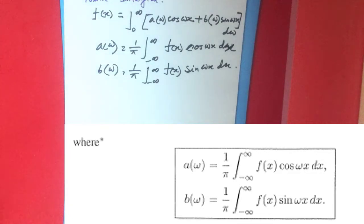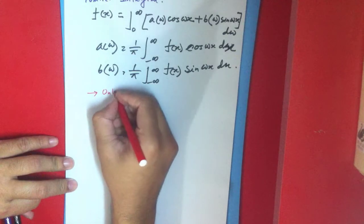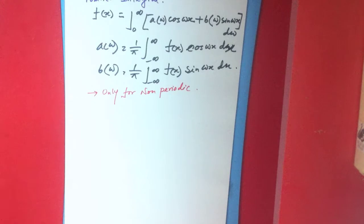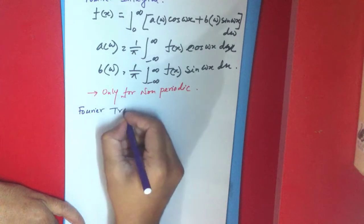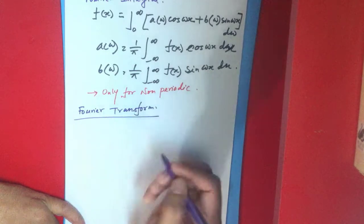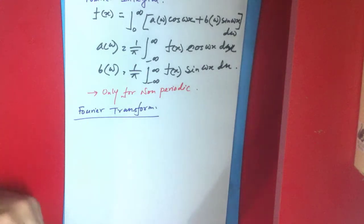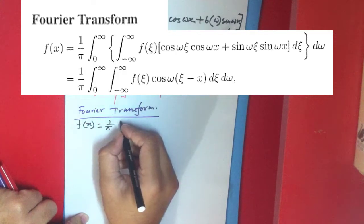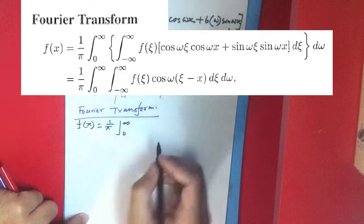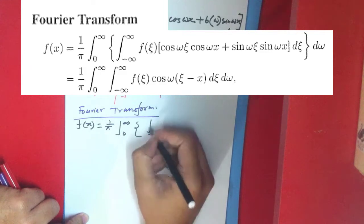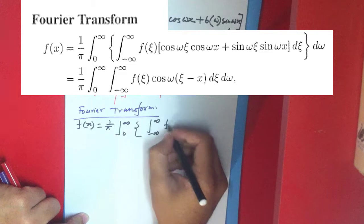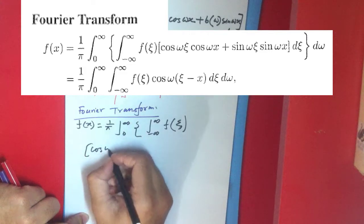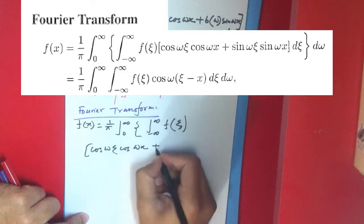This is only for non-periodic functions. Now for Fourier transform, f(x) equals 1/π times the integral from 0 to infinity, which contains another integration from -∞ to infinity of f(ξ) [cos(ω) cos(ωx) plus sin(ω) sin(ωx)] dξ dω.